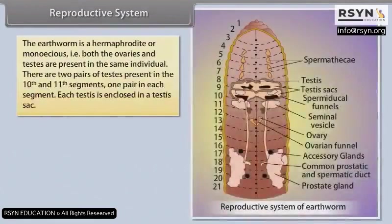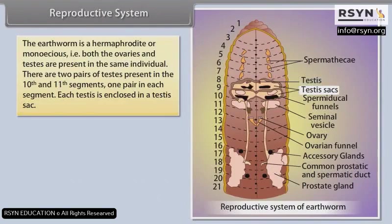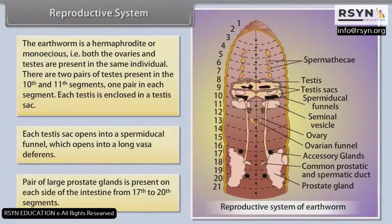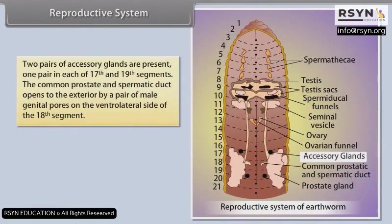Reproductive System: The earthworm is a hermaphrodite or monoecious — both ovaries and testes are present in the same individual. There are two pairs of testes in the 10th and 11th segments. Each testis is enclosed in a testis sac, which opens into a spermiducal funnel leading into a vas deferens. A pair of large prostate glands is present on each side of the intestine from the 17th to 20th segments. Two pairs of accessory glands are present, one pair each in the 17th and 19th segments.